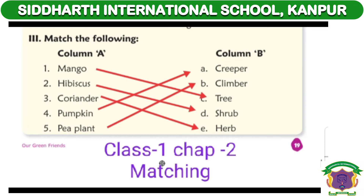Now we will write in Column B. A number: Creeper (C-R-double-E-P-E-R). B number: Climber (C-L-I-M-B-E-R).